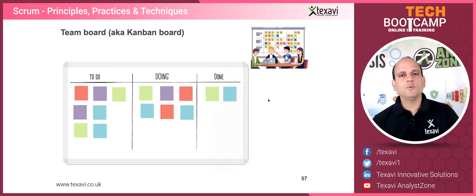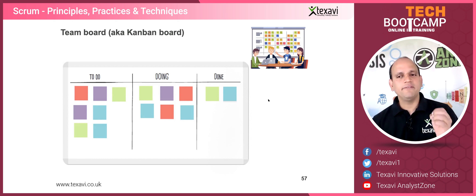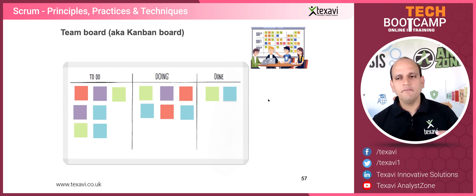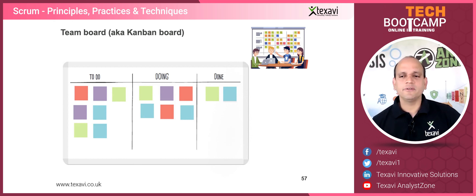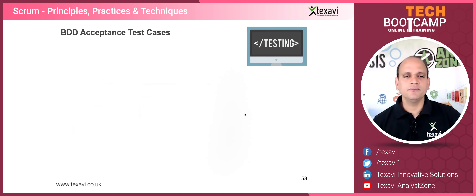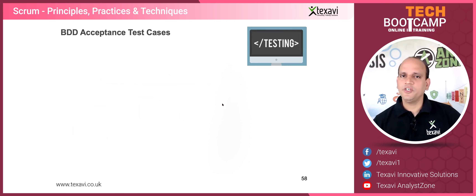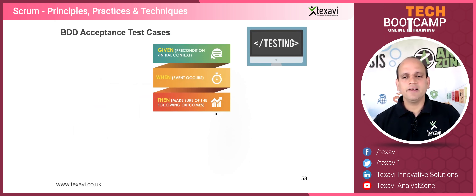That's the beauty of this Kanban — it's called visual information radiators; they radiate information visually, very effectively. It's a very powerful tool and I would suggest you use it. We use Trello, TFS, and Jira — all of these give you that flexibility.